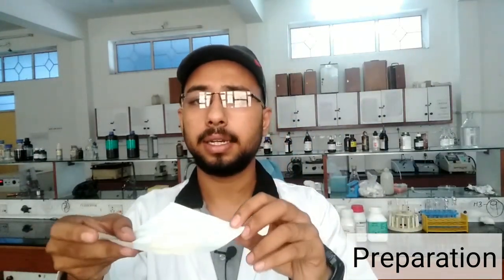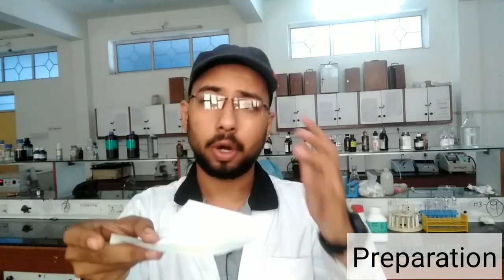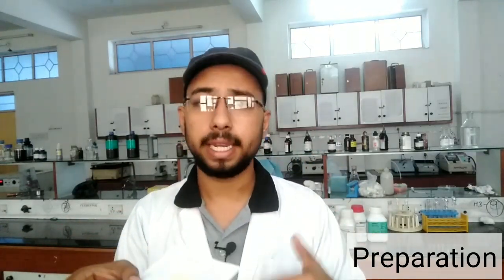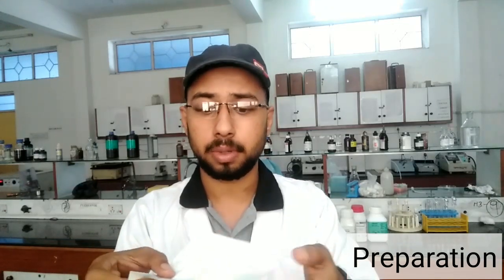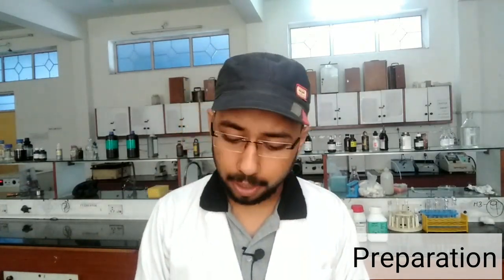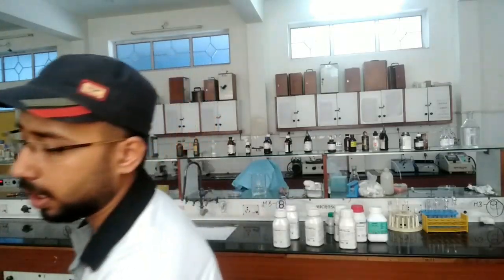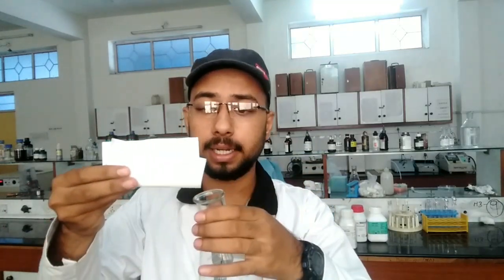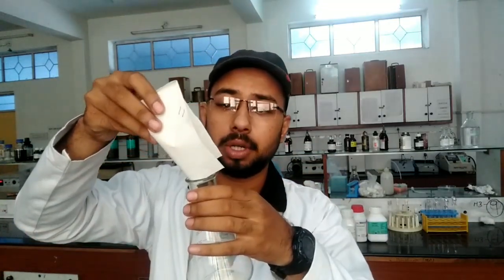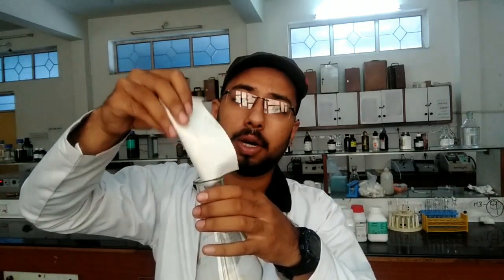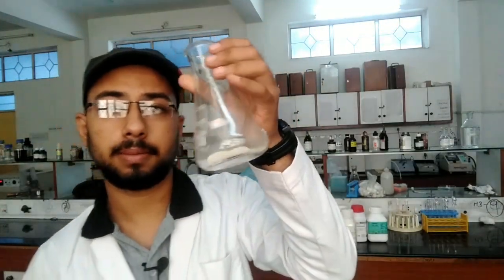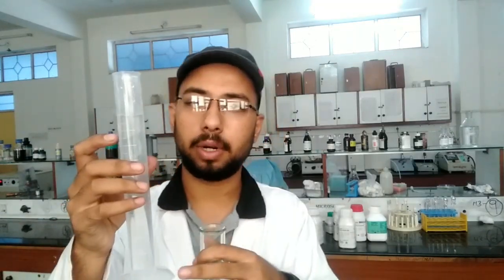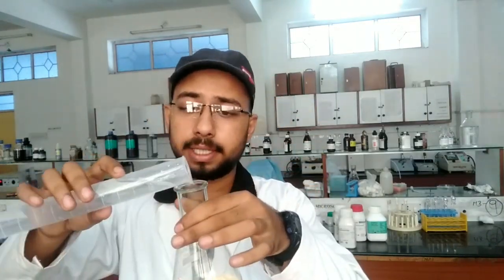Weigh out the blood agar powder on butter paper — butter paper is recommended for weighing culture media. Now take a properly cleaned conical flask and add all the blood agar powder into it, then add 100 ml of distilled water and mix it properly.